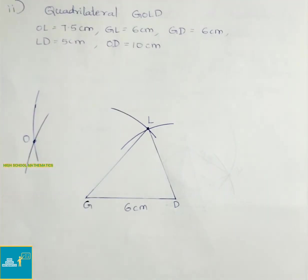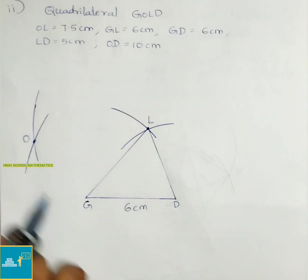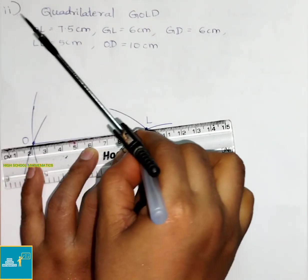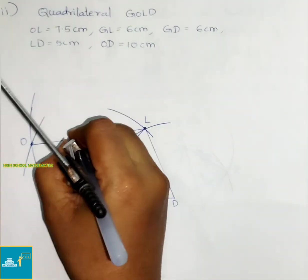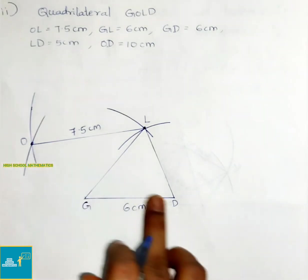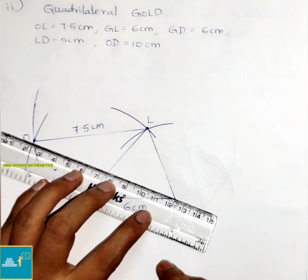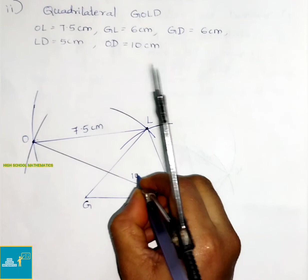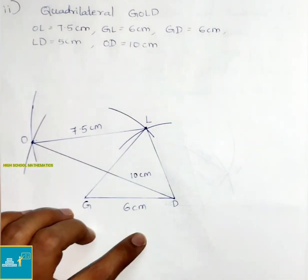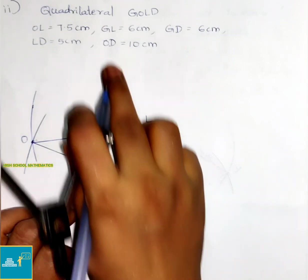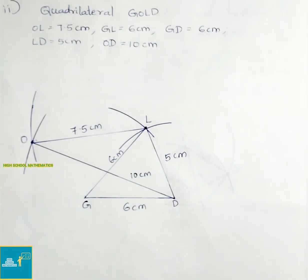Join OL, then join OG, and also join OD. OL length is 7.5 cm. OD they have given as 10 cm. LD length is 5 cm, GL length is 6 cm. Now join OG.